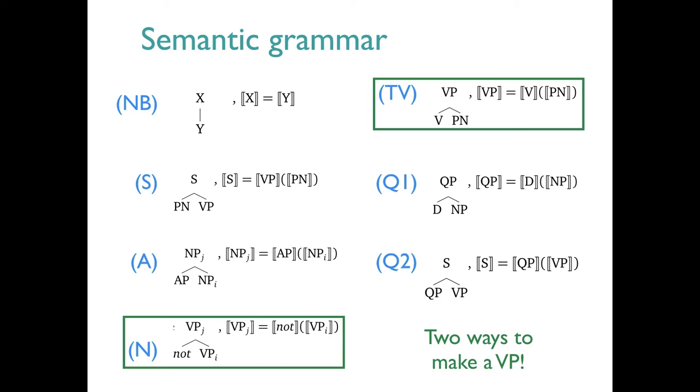We also have two ways of creating VPs, and they are potentially interconnected. For instance, I can use rule TV to create a VP node, and then rule N can negate it. And of course, rule N is also happy to take simple intransitive VPs like run as its lower VP, VP sub i. In other words, a transitive verb with its object argument in is just like an intransitive verb semantically.